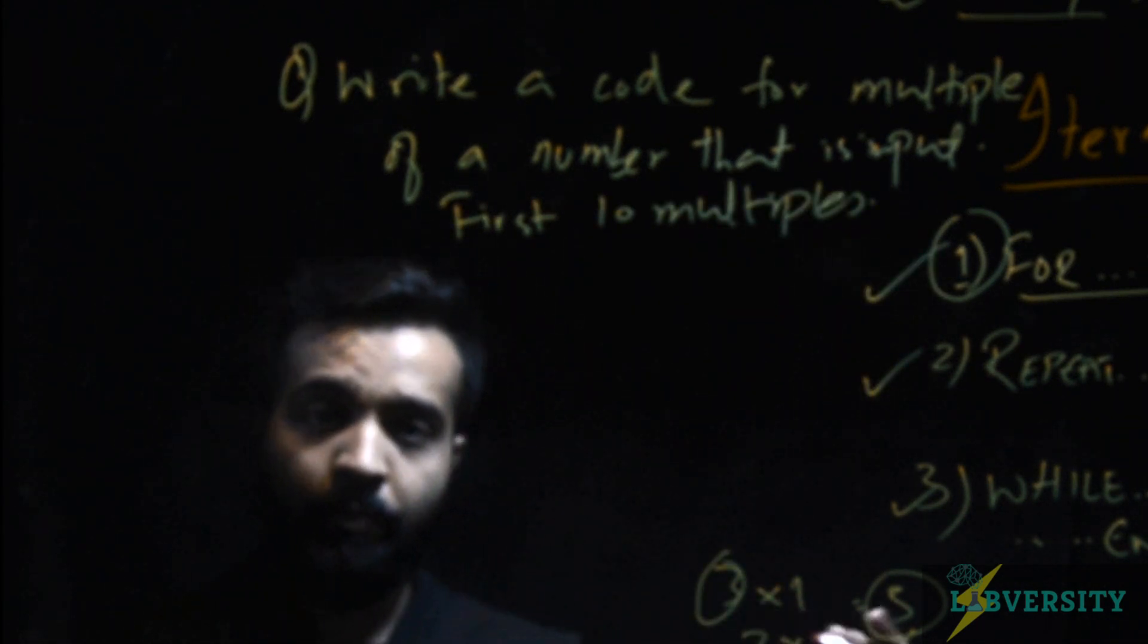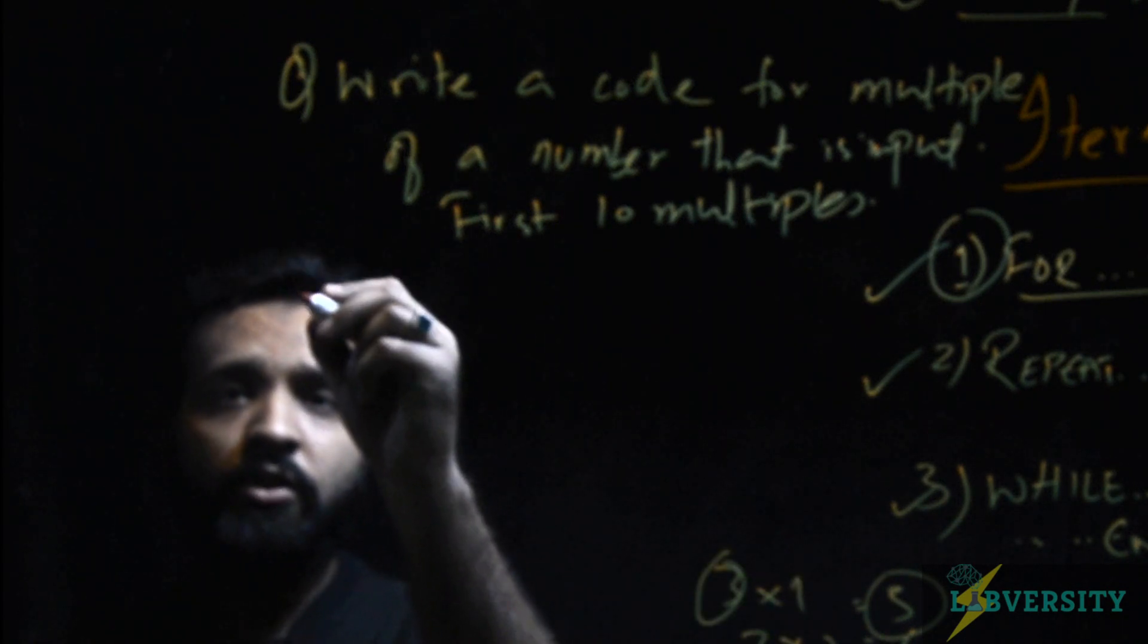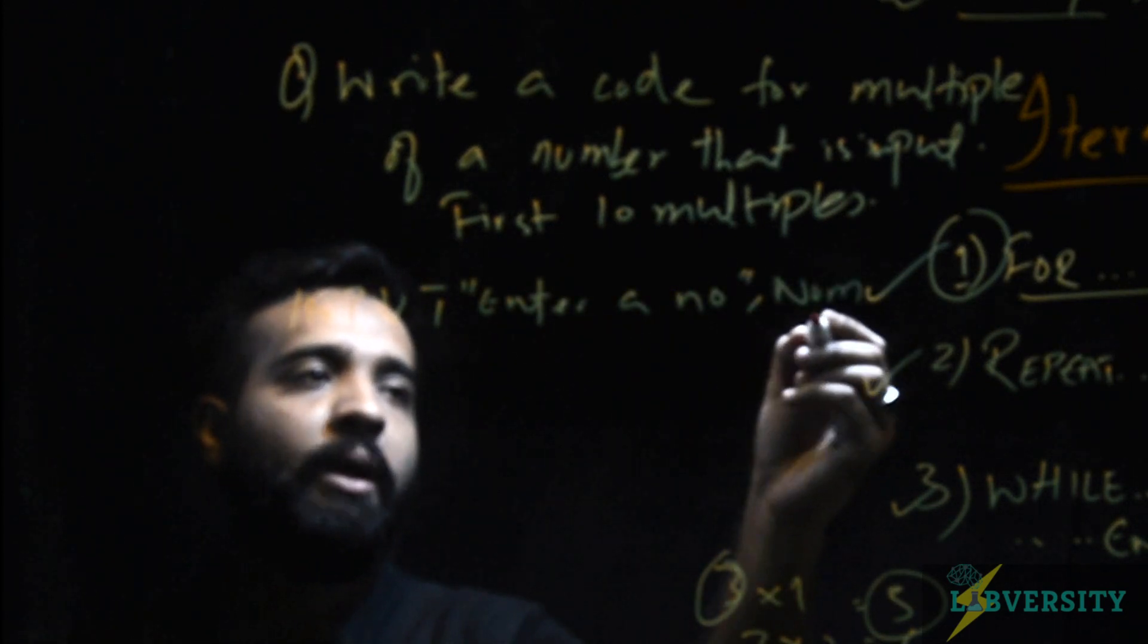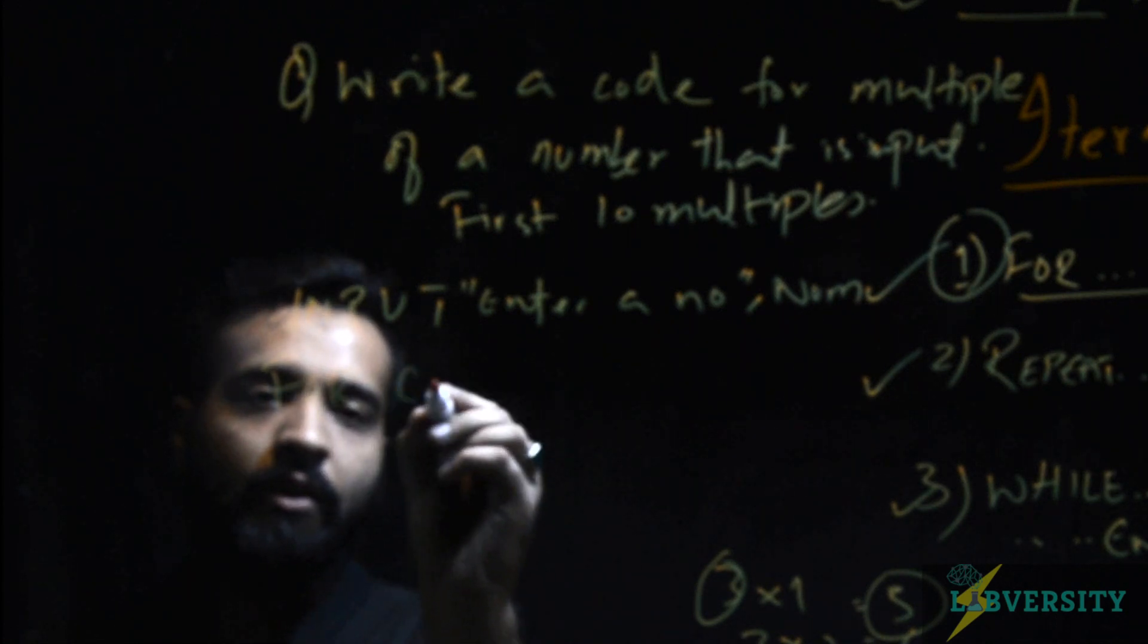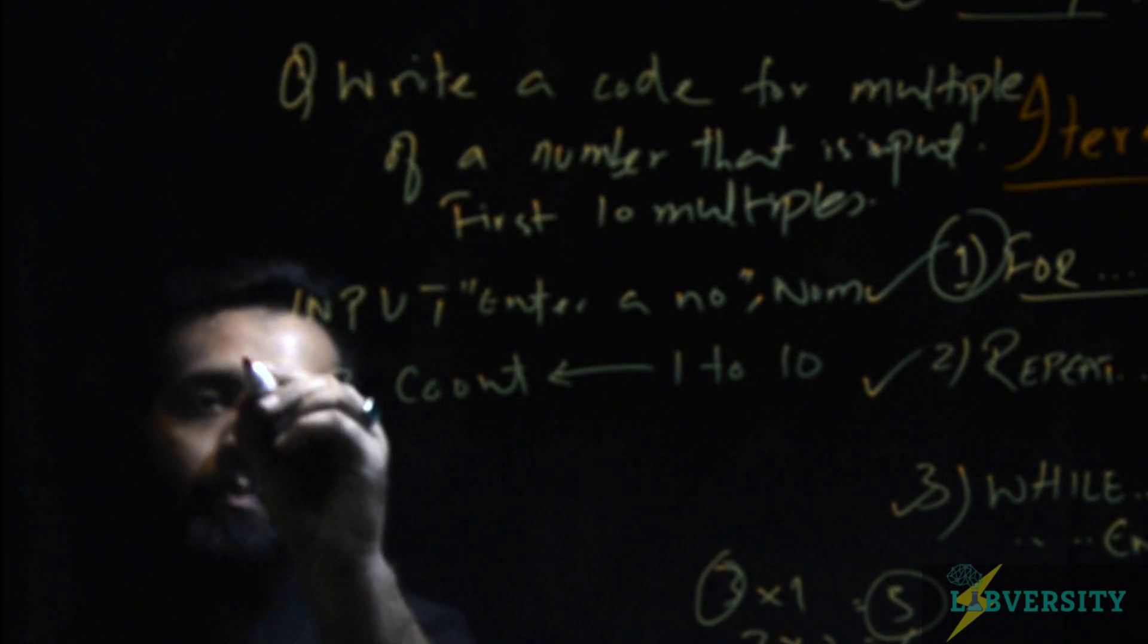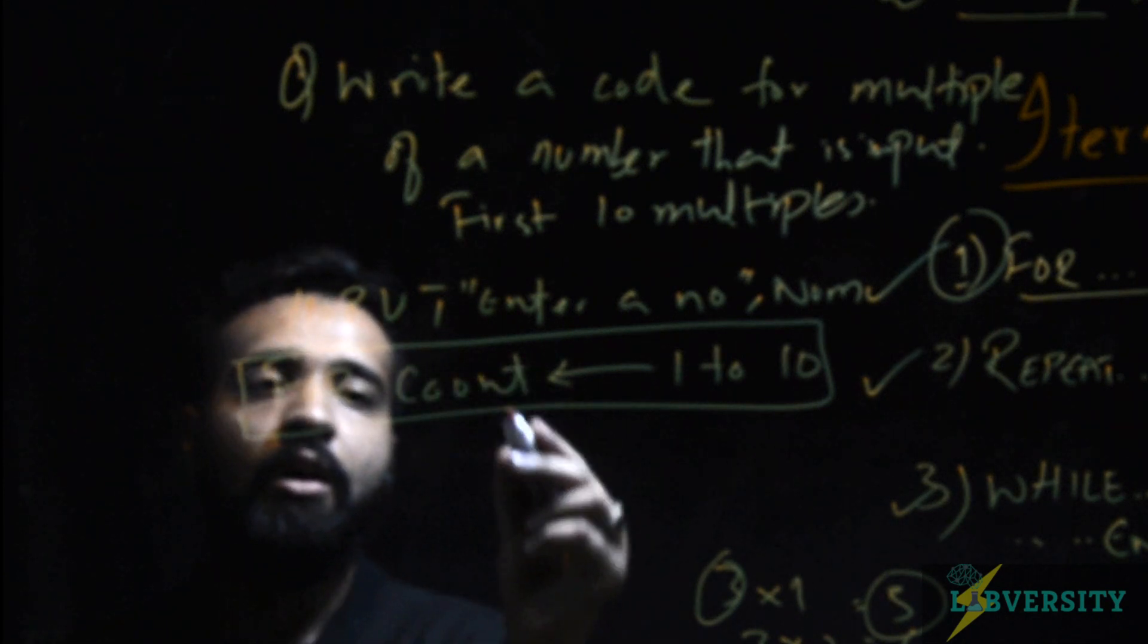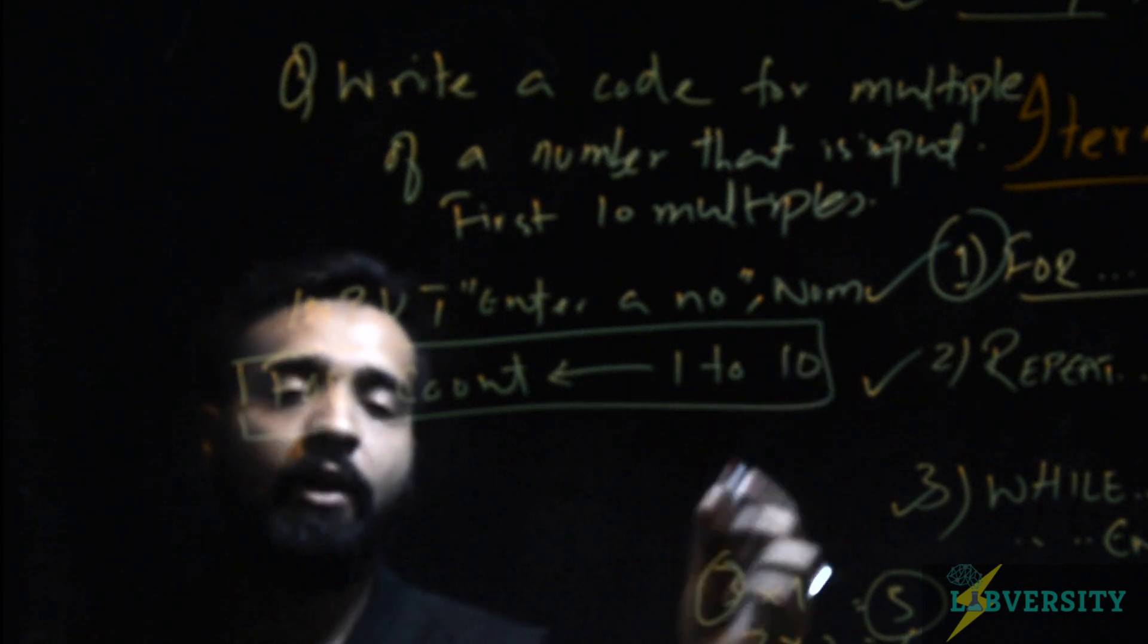We know that 10 repetitions are required. First we have to input a number: input enter a number, comma num. This will be our variable. Then we can say for count 1 to 10. This line is the line that we use to initialize a for loop. We take a variable called index or counter or whatever and then we declare a range of repetitions to it. So it will start from 1 and it will end till 10.